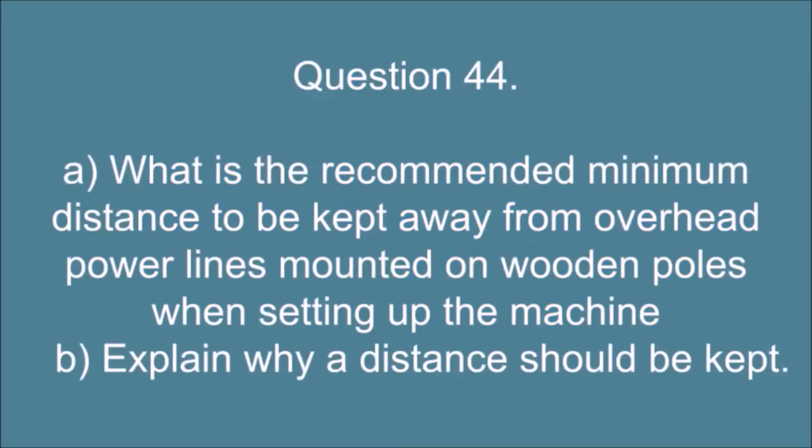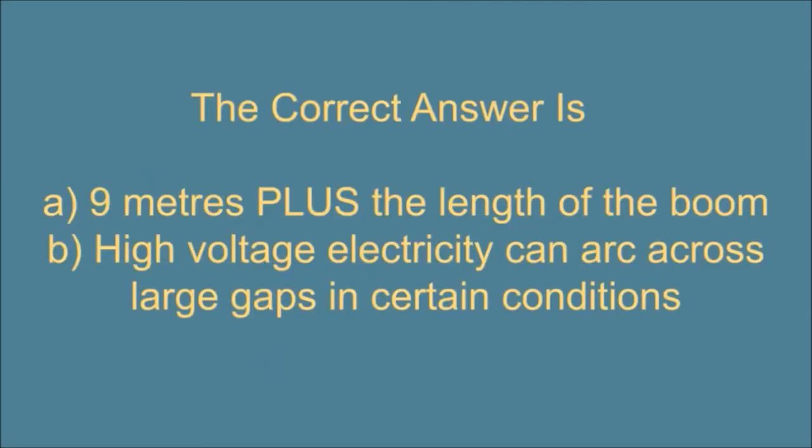Question 44. A) what is the recommended minimum distance to be kept away from overhead power lines mounted on wooden poles when setting up the machine, b) explain why a distance should be kept? The correct answer is: a) 9 meters plus the length of the boom, b) high voltage electricity can arc across large gaps in certain conditions.